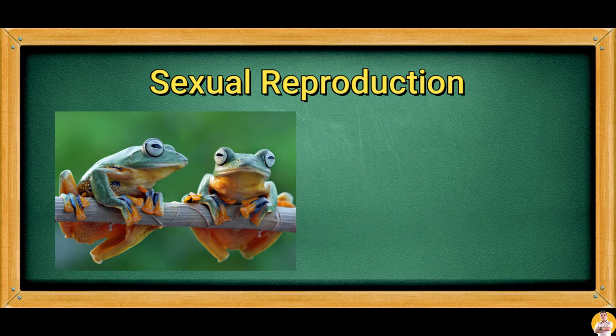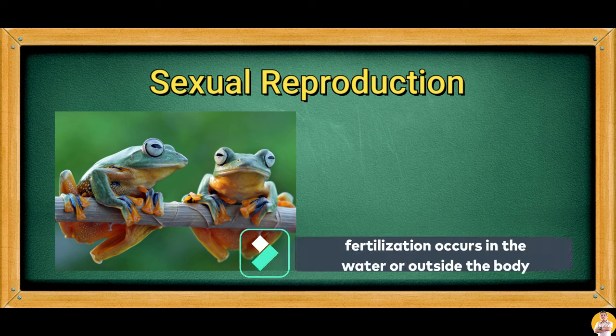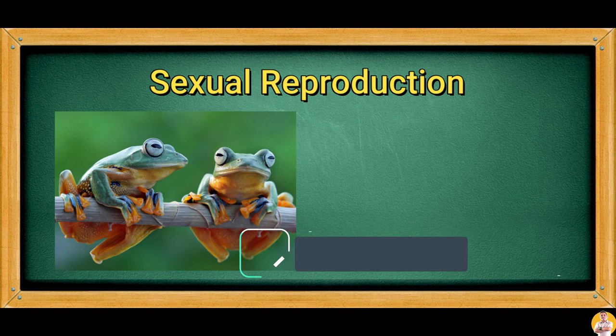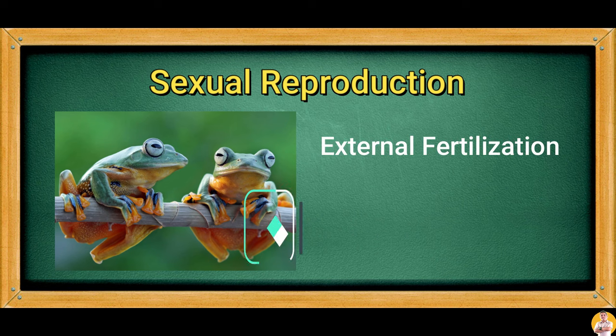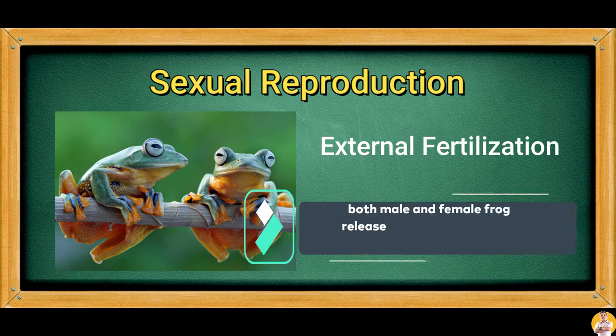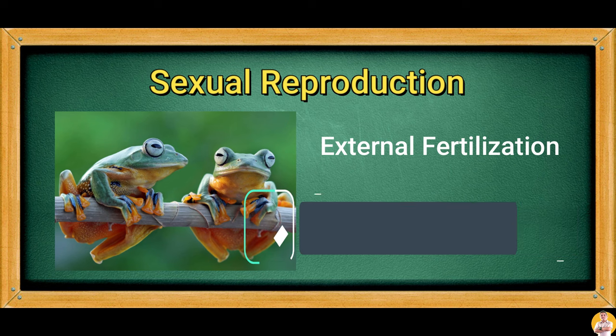Unlike frogs, which also reproduce sexually, fertilization occurs in the water or outside the body. External fertilization happens when both the male and female frog release sperm and egg in the water to form fertilized eggs.